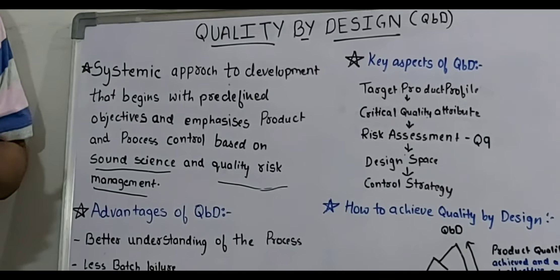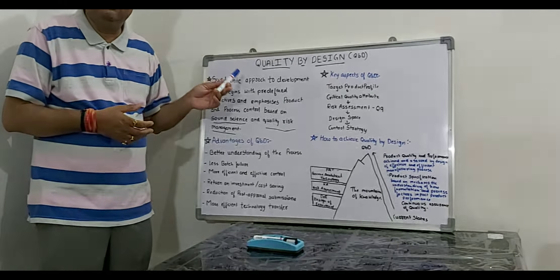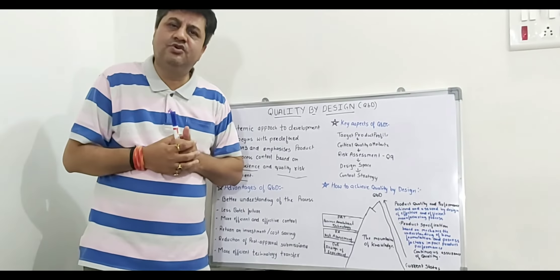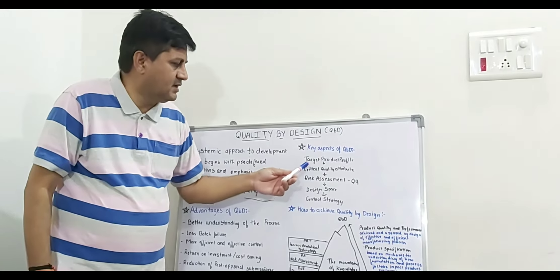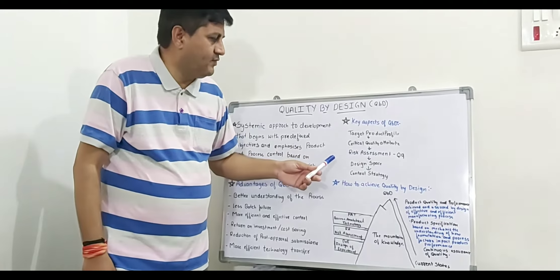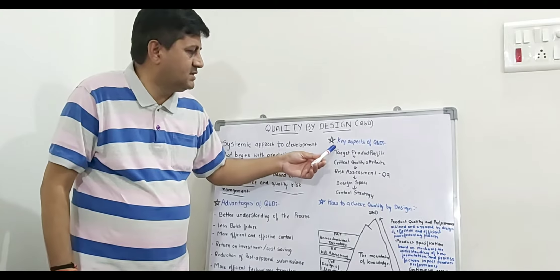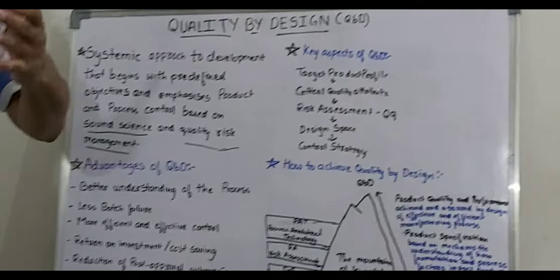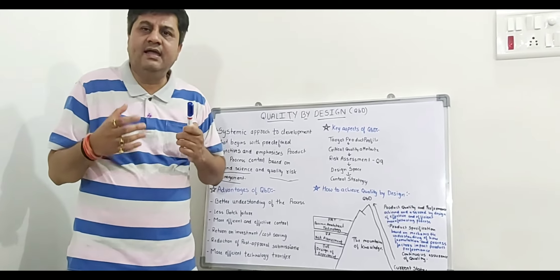Now let us look at the different key aspects of QBD. There are different key aspects. The first one is the Target Product Profile. Second is Critical Quality Attributes. Third is Risk Assessment, which comes under ICH guideline Q9. Fourth is Design Space, and the last one is the Control Strategy.